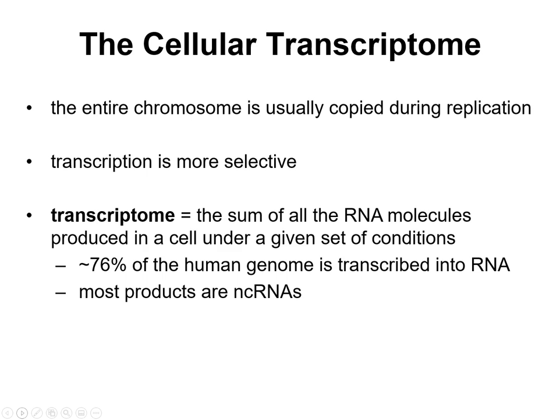When we talk about the cellular transcriptome, we're talking about all the RNA molecules produced in a cell under a given set of conditions. About three-quarters of the human genome is transcribed into RNA, and the majority of those products are non-coding RNAs — not mRNA as you might expect. The entire chromosome is copied during replication, but with transcription we're more selective, which is why only a part of the genome is transcribed.